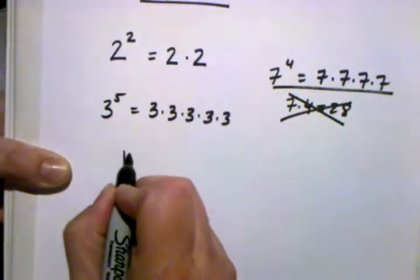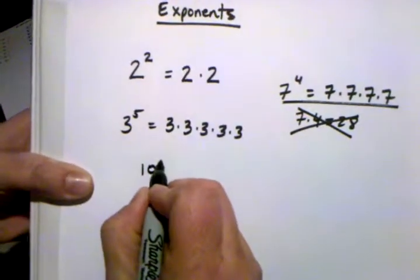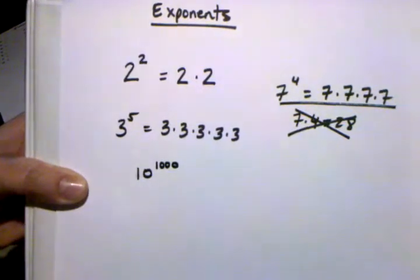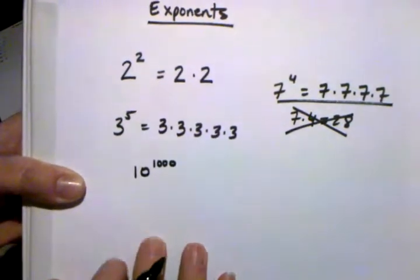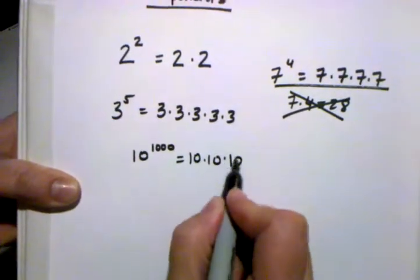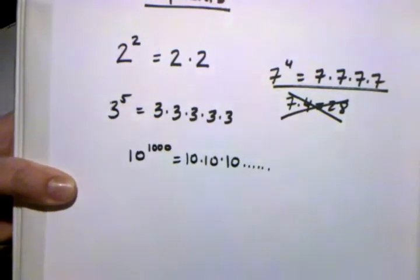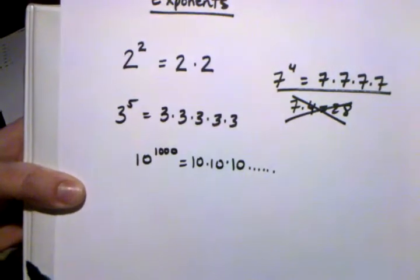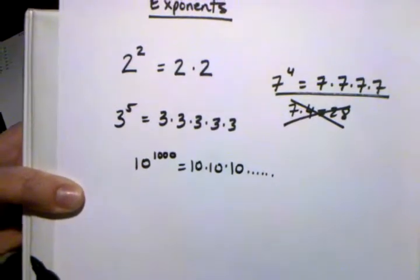For instance, if I wanted to write 10 to the 1,000th power, this is a lot shorter. It's a lot shorter way to write this number than it would be if I were to actually write out 10 times 10 times 10 and so on a thousand times, or even if I were to solve what that is and write that number out. It's a phenomenally huge number.